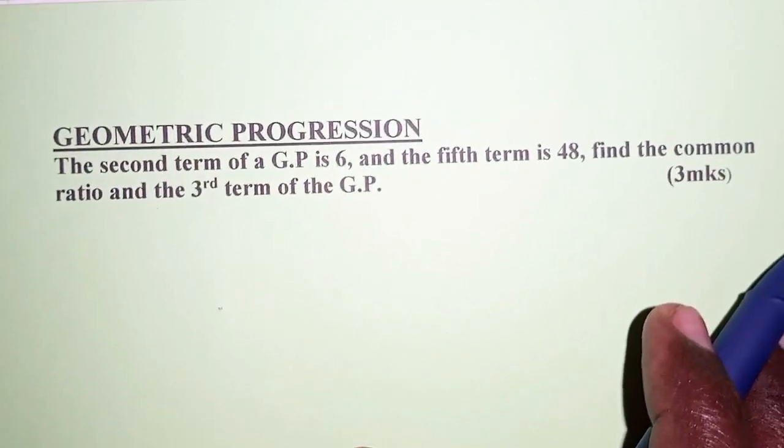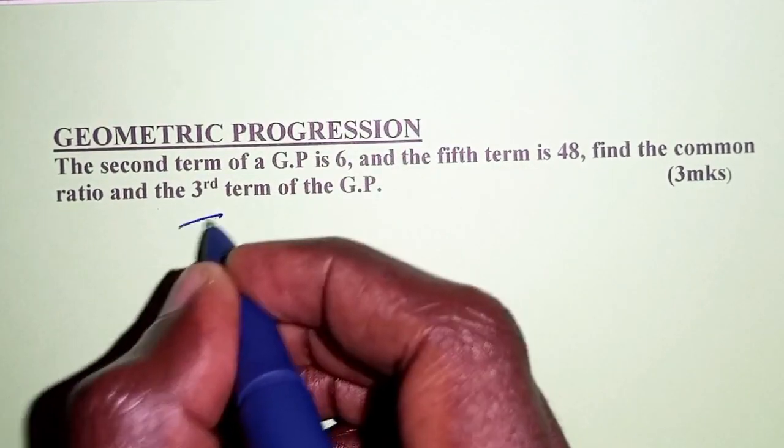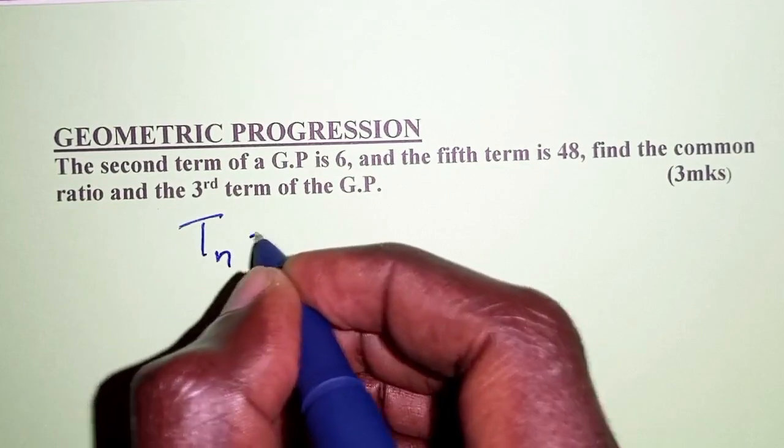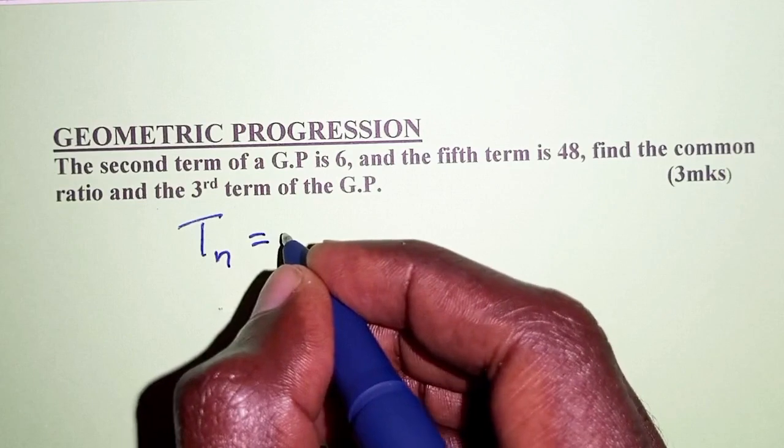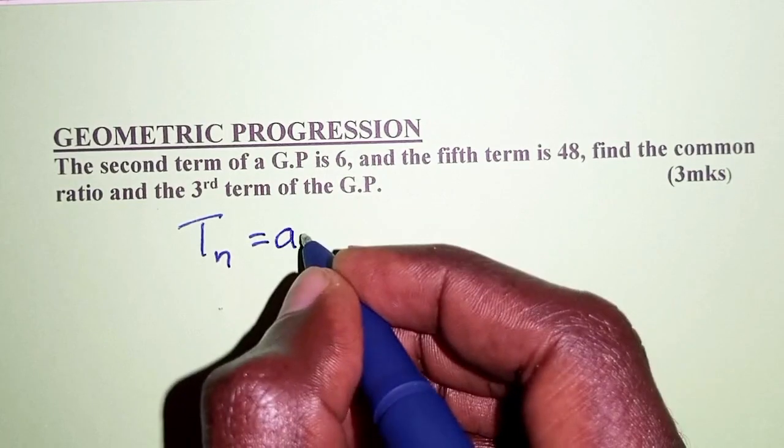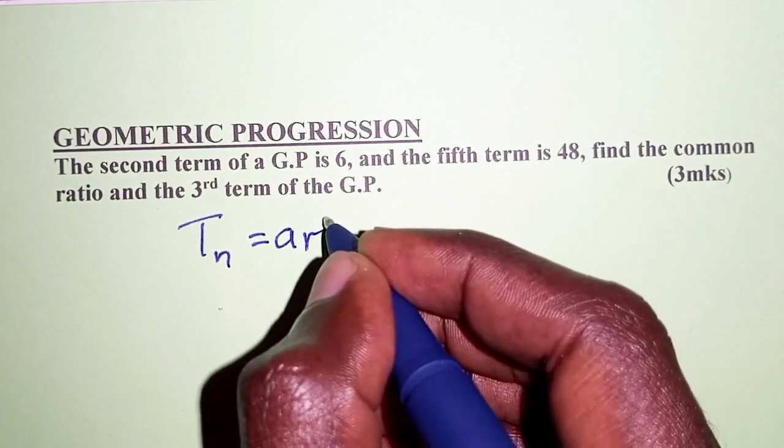So the first thing, let's begin by writing the general formula for the nth term of a GP. The nth term of a GP is given as the product of the first term and the common ratio raised to n minus 1.